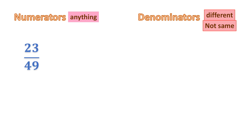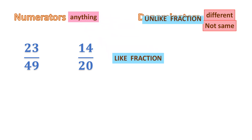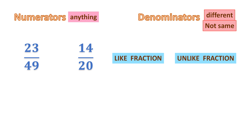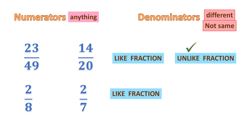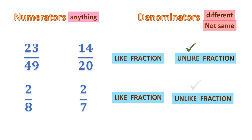Take 23 over 49 and 14 over 20. Is it a like fraction or an unlike fraction? The denominators are different. The numerators are also different, but we do not look at the numerators — we look at the denominators. Denominators are different, so this is an unlike fraction. Next example: 2 by 8 and 2 by 7. The denominators are different — 8 and 7 — so they are unlike fractions.